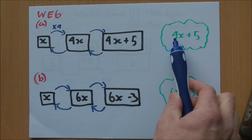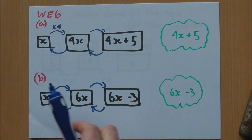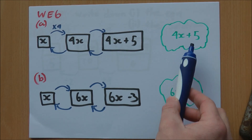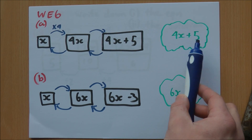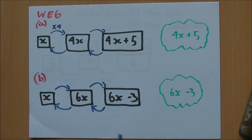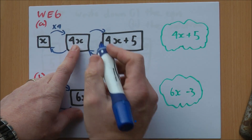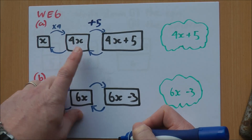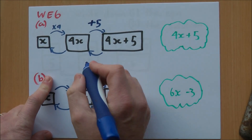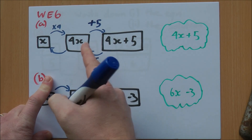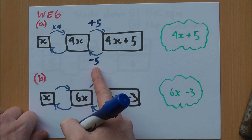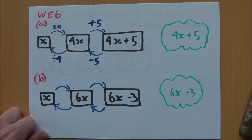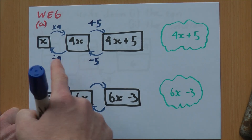If we think about our x, the first thing we have is 4x, which is 4 times x. So to get from x to 4x, we're multiplying by 4. Once we've done that, the next part of our expression is plus 5, so we're adding on 5. The inverse of plus 5 is minus 5, so to get back we're subtracting 5. To get back further, the inverse of times 4 is divide by 4. And we've completed that question.